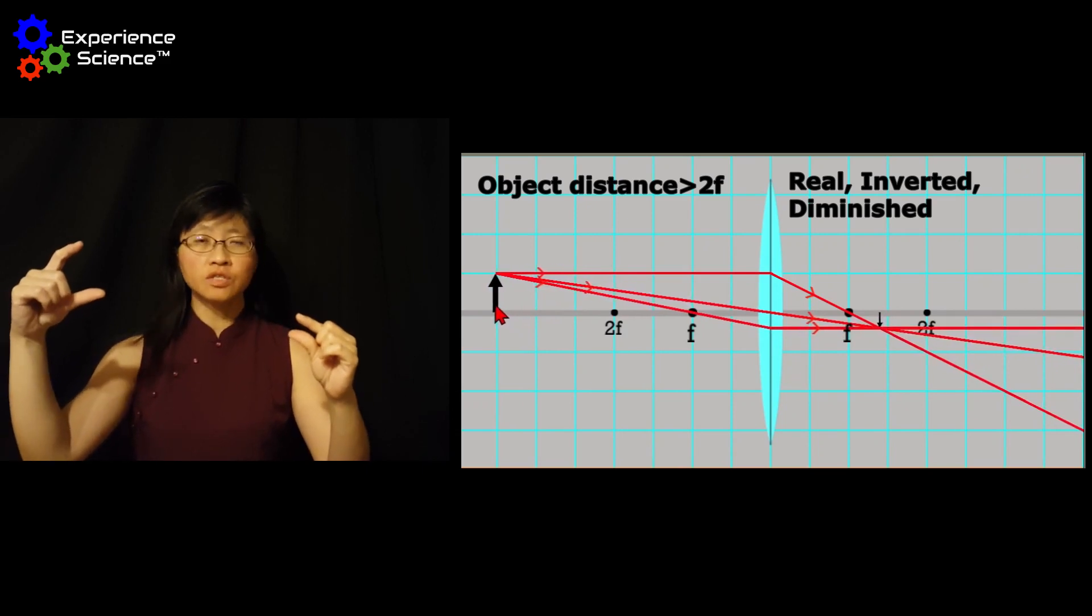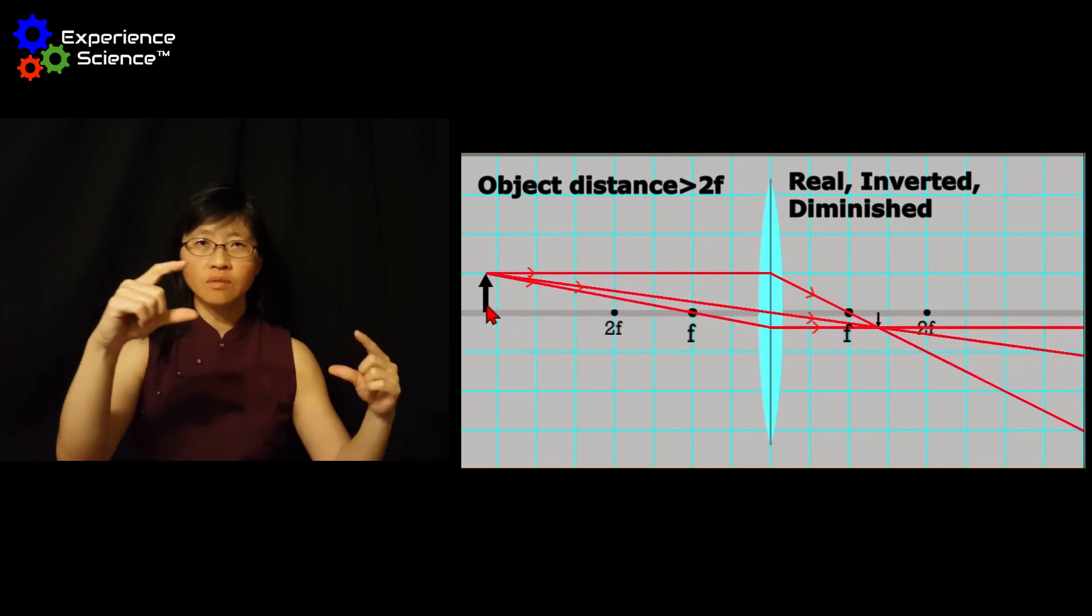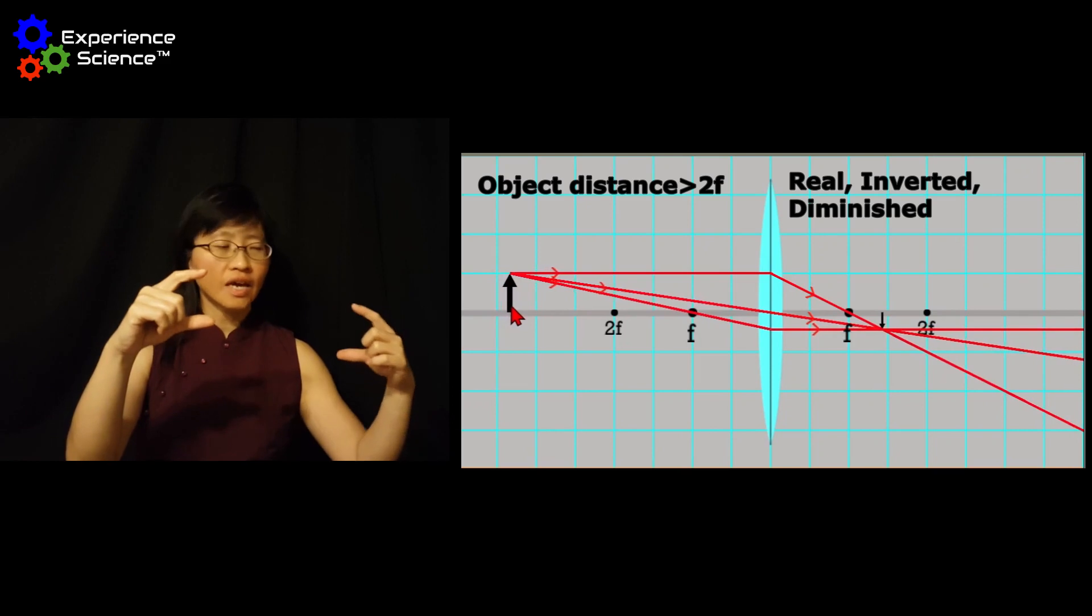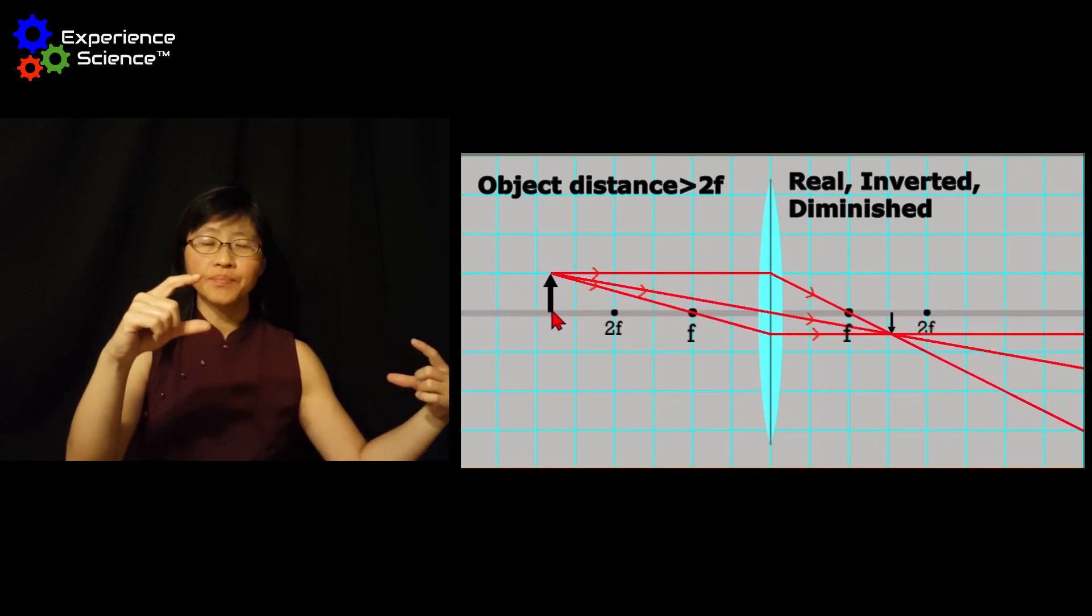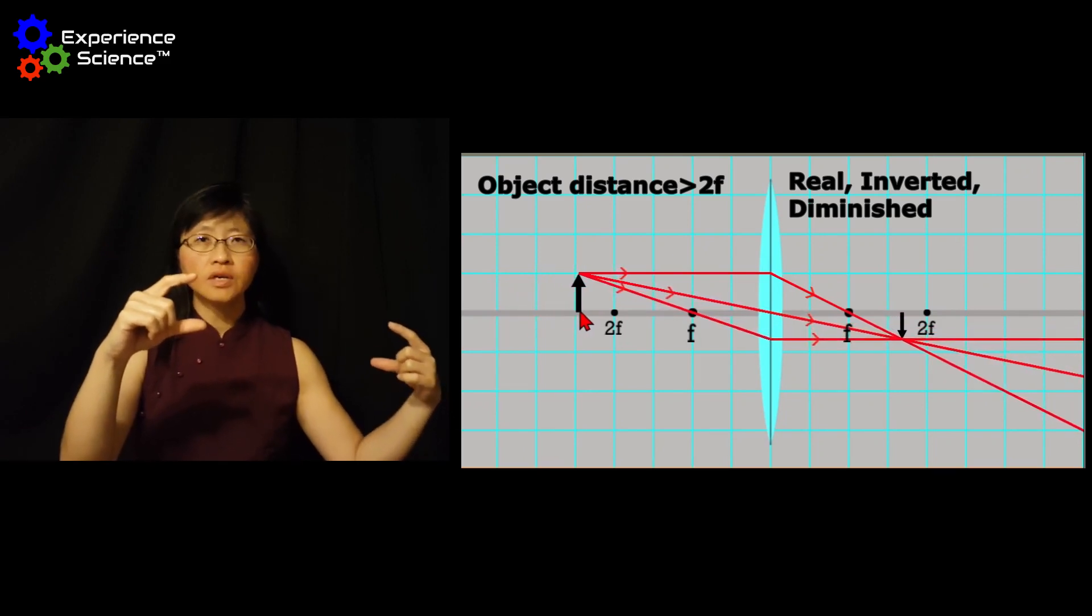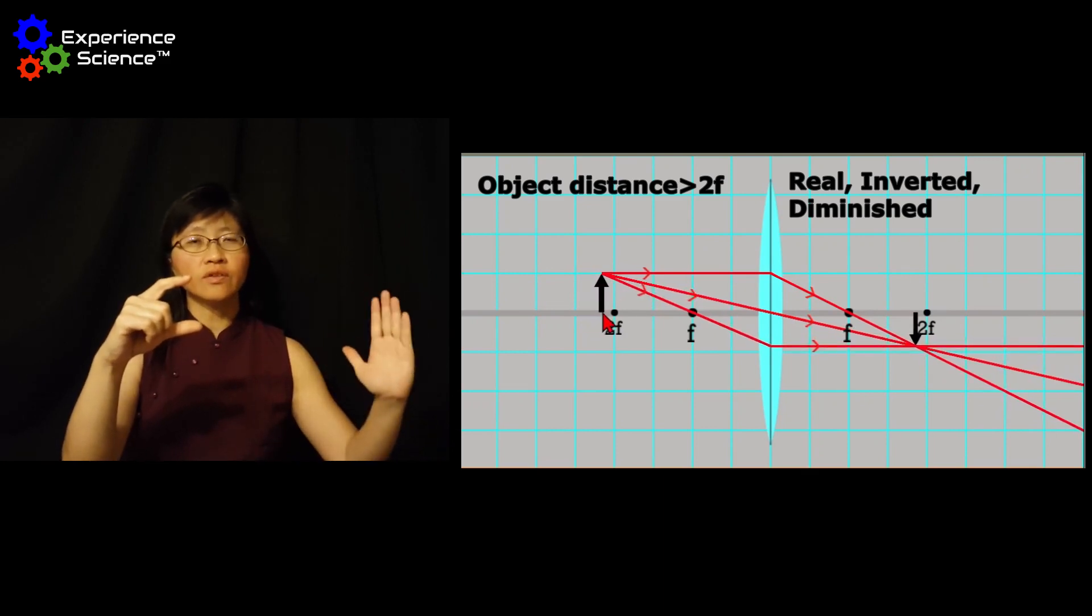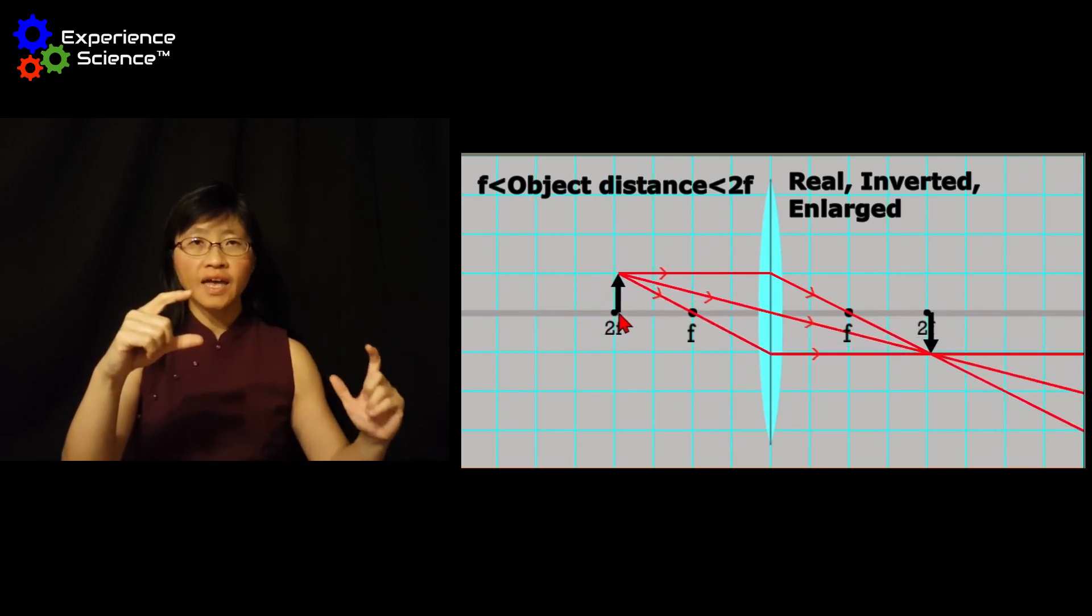The opposite is true when we shift the object closer to the lens, and the image moves away. Here, all images on this side of the lens are real and inverted.